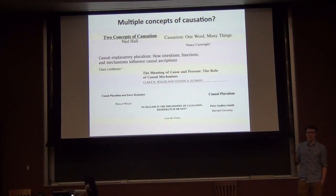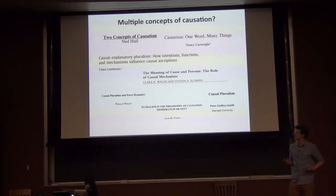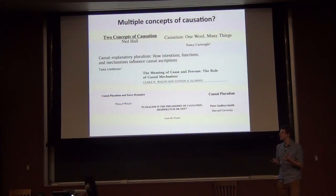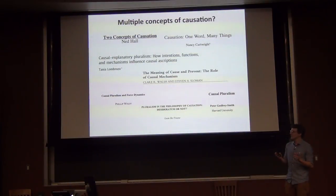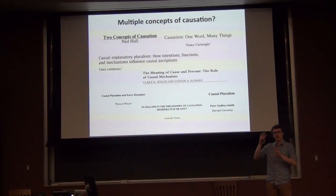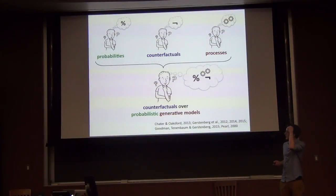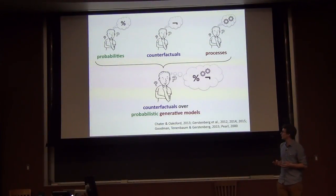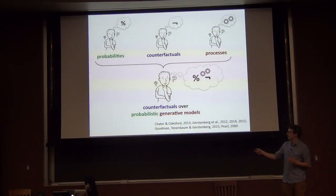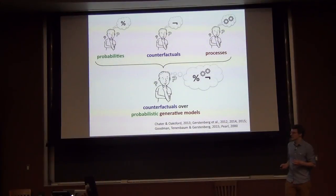For those who have read about causality or philosophy, there are many different ideas about what causation could be, and many accounts argue it's a very pluralistic notion. We have process ideas — things bumping into each other — but also more abstract, non-factual ideas, and maybe they don't go into one bigger concept. What I'm going to argue is that all these things philosophers have identified and psychologists have tested are important, but maybe we can aim for a unificationary approach, understanding causal judgments by thinking about counterfactuals over probabilistic generative models that combine all these different aspects.